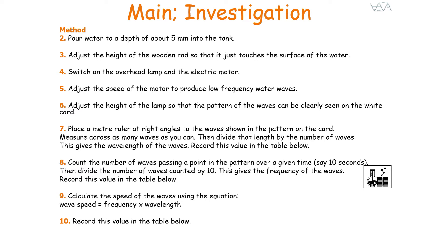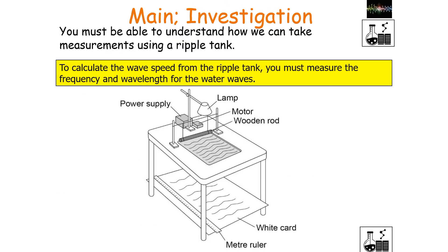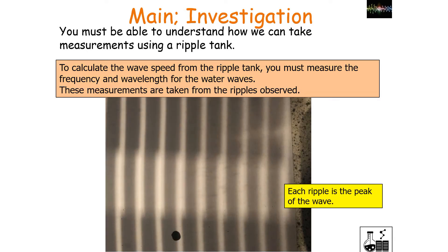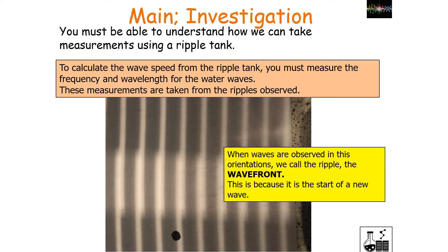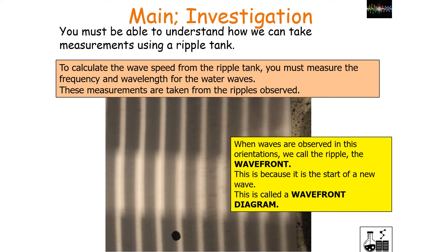To calculate the wave speed from a ripple tank you need to measure the frequency and wavelength for water waves. Consider what the image produced in your ripple tank looks like — you would observe measurements of ripples on the card underneath. Each ripple can be considered as the peak of a wave. When waves are observed in this orientation we call the ripple a wave front, because it's the start of a new wave — this is an example of what we call a wave front diagram.